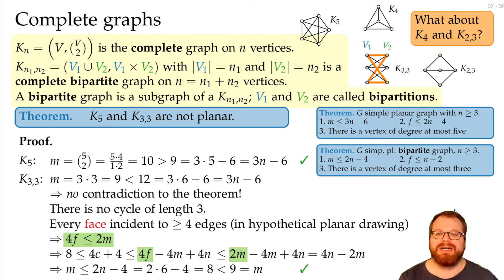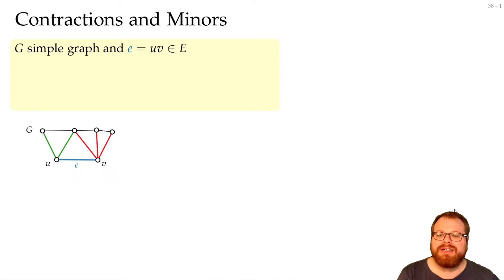Now why did we look at these complete graphs? The reason is that I want to tell you something about contractions and minors. Let's say we have a simple graph, and we have some edge e between two vertices u and v. We want to contract this edge, and this gives us a different graph.